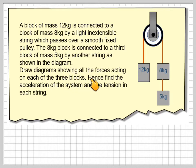Draw a diagram to show all the forces acting on each of the three blocks, hence find the acceleration of the system and the tension in each string. So we're going to have two tensions, one here and here, that's the same. These two are the same because it's a light, smooth pulley and this tension here. And because this weighs more than this, we're going to assume it's going to be moving in that direction.